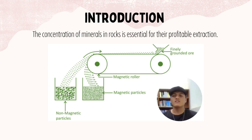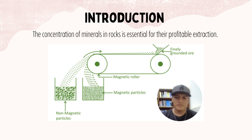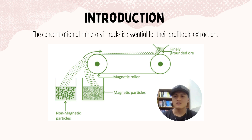The concentration of minerals in rocks is essential for profitable extraction. Chemical elements are widely distributed in the crust, but their concentration in rocks must be high enough to allow their profitable extraction. This concentration occurs as a consequence of geological processes, such as sedimentary or metamorphic processes, which cause the concentration of the element.